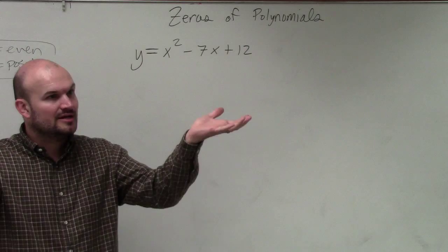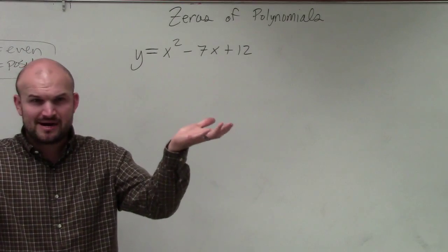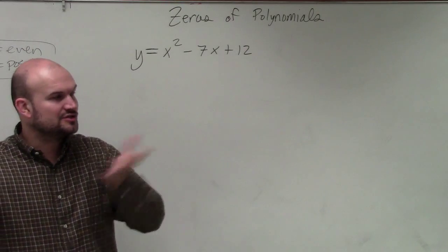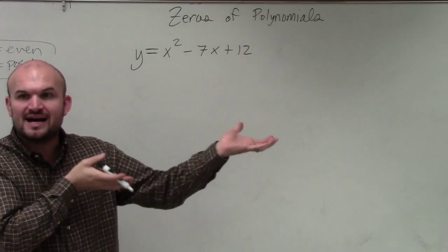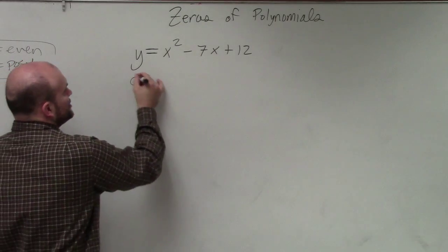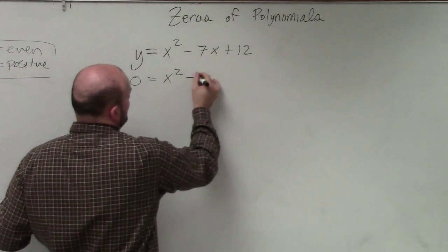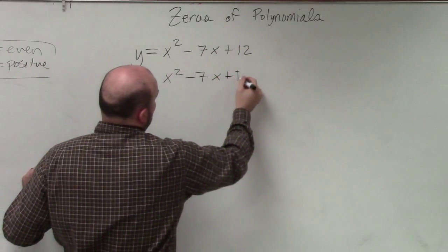So if you have values on both sides, which I noticed on your test, you had a lot of problems where values were on both sides. And students didn't always get the values to one side to set it equal to 0. So make sure we always have our polynomial set equal to 0 first.